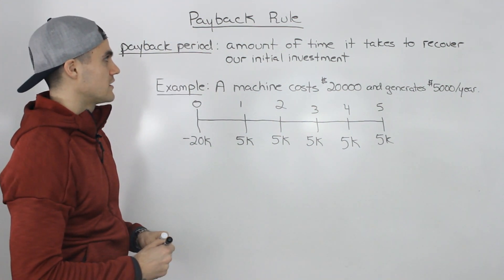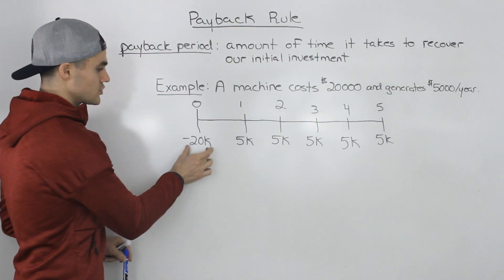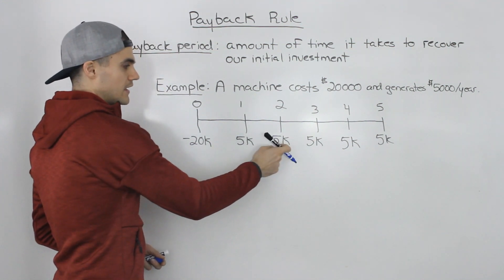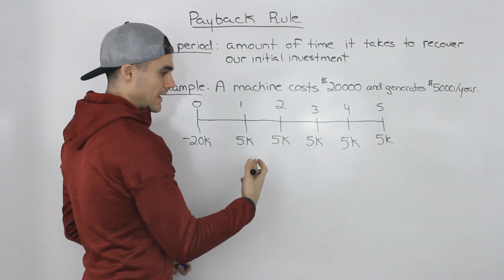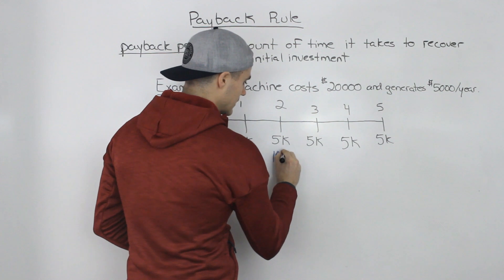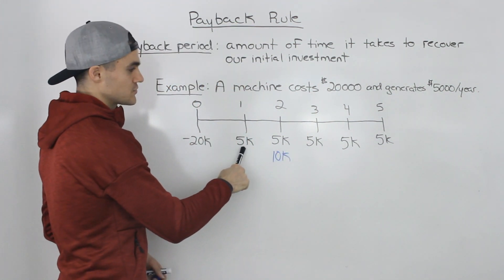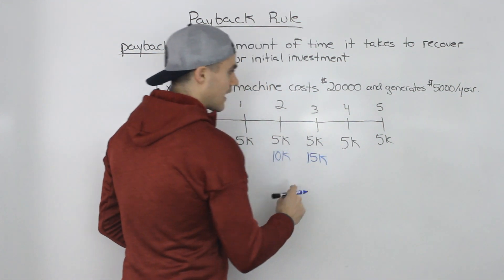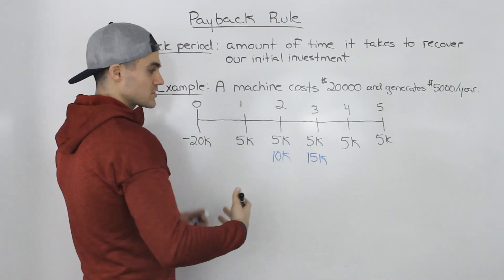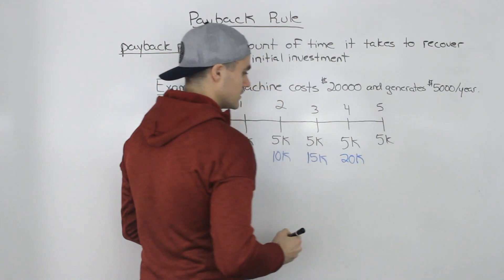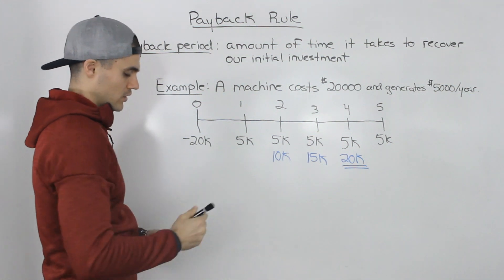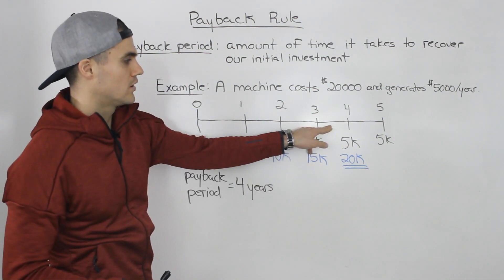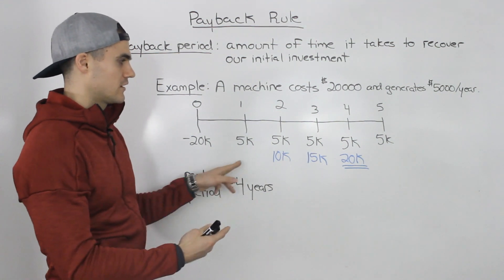Let's calculate the payback period — the amount of time it takes to recover our initial $20,000 investment. In year one we make $5,000 cumulative. In year two another $5,000, so $10,000 cumulative. In year three another $5,000, so $15,000 cumulative. In year four another $5,000, bringing cumulative cash flows to $20,000. At that point we have recovered our initial investment, so the payback period is four years.